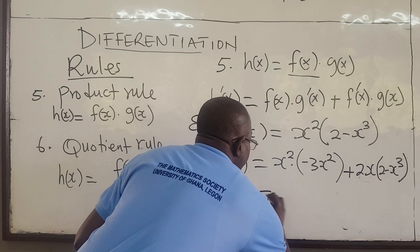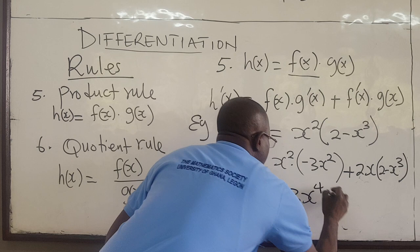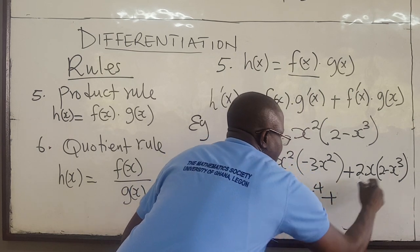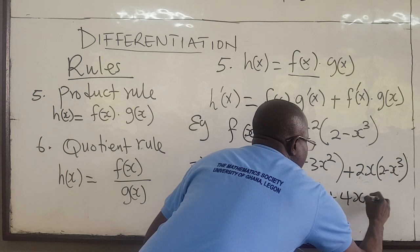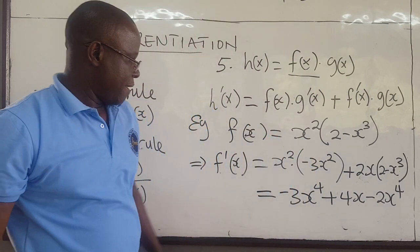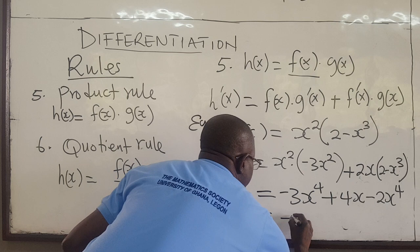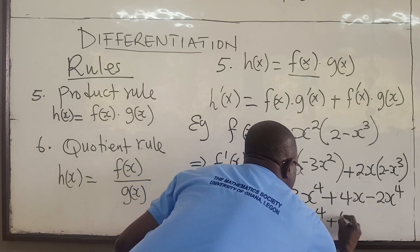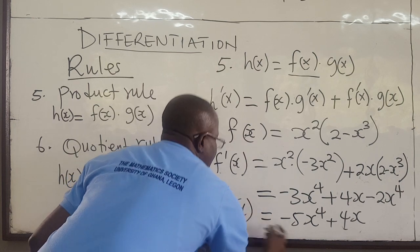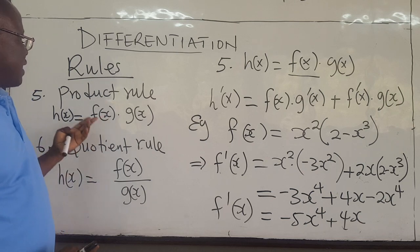You can simplify it whichever way you want. Rewriting: negative 3x squared times x squared is negative 3x to the fourth, plus 2x times (2 minus x cubed) gives 4x minus 2x to the fourth. Combining like terms gives negative 5x to the fourth plus 4x. So f'(x) equals negative 5x⁴ plus 4x. That is how you apply the product rule.